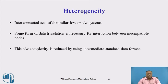Heterogeneity issues arise from an interconnected set of dissimilar hardware or software components. Some form of data translation is necessary for interaction between incompatible nodes, and this is reduced by using an intermediate standard data format. Different nodes in the network may have different operating systems, hardware configurations, RAM capacity, processors, and software configurations. Different data translation mechanisms and standard data formats are all issues related to heterogeneity.